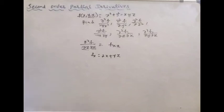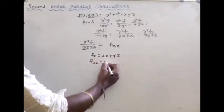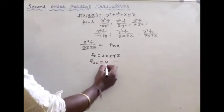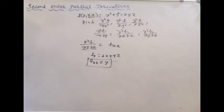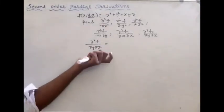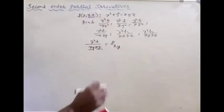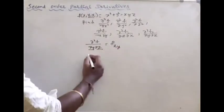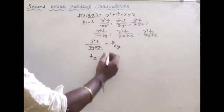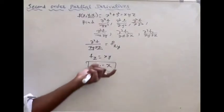This is the main difference between normal differentiation and partial differentiation. For dou square f by dou y dou z: the meaning is first partial derivative with respect to z, then with respect to y. First with respect to z, then with respect to y gives x. First with respect to y gives xz, then with respect to z gives x. This is our required answer.